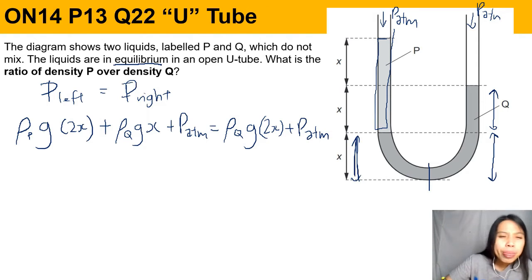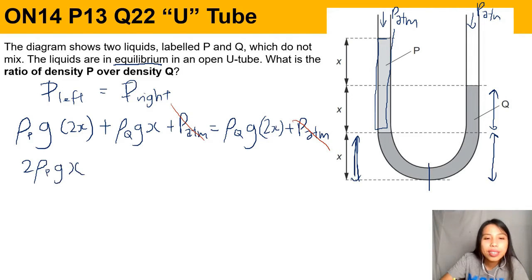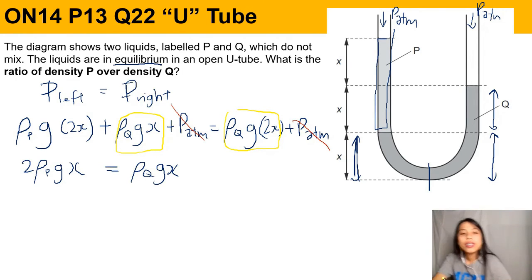So if you rearrange this a bit, atmospheric pressure minus atmospheric pressure—so these two fellas are out already. And actually this one P, we can rewrite it as 2ρₚgx. ρQ, you can move to the other side actually. So move to the other side, minus one, it'll just be ρQgx, where the two go, because here got two, here got one. So I moved to the other side, only left one. Now two minus one is one.